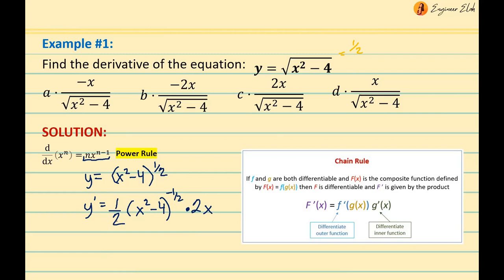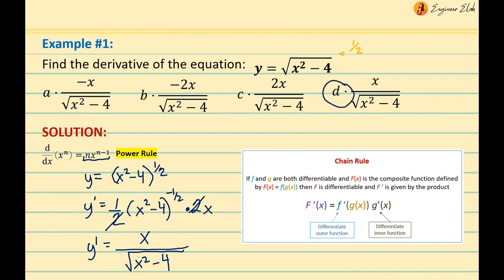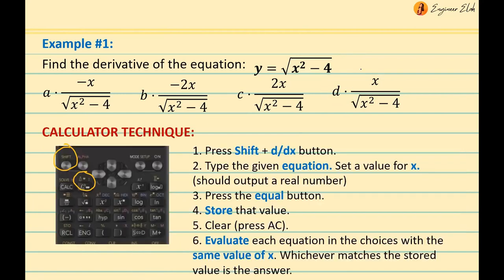Now we can simplify. We can cancel the 2, leaving just x. Then, since we typically don't write expressions with negative exponents, we move the negative-one-half power to the denominator using the law of exponents. The numerator is just x, and the denominator becomes the square root of (x squared minus 4). So our final answer is letter B.